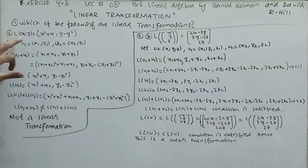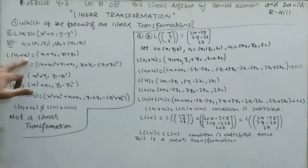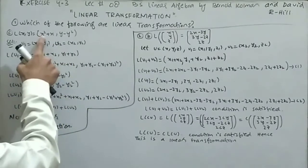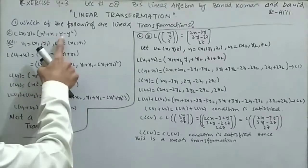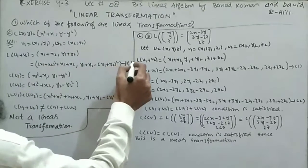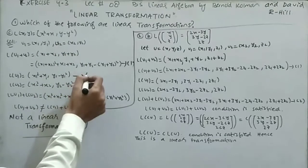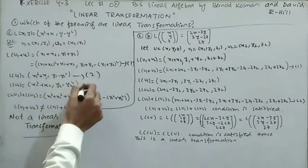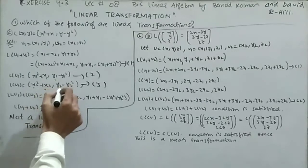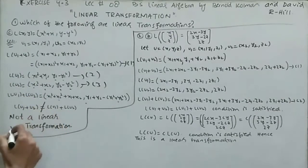Part C: L(x, y) = (x²+x, y-y²). Let u1 = (x1, y1), u2 = (x2, y2). L(u1+u2): substitute x1+x2 and y1+y2 to get ((x1+x2)²+(x1+x2), (y1+y2)-(y1+y2)²). L(u1) = (x1²+x1, y1-y1²), L(u2) = (x2²+x2, y2-y2²). Adding them gives x1²+x2²+x1+x2, y1+y2-y1²-y2². Comparing, L(u1+u2) and L(u1)+L(u2) are not the same, so this is not a linear transformation.